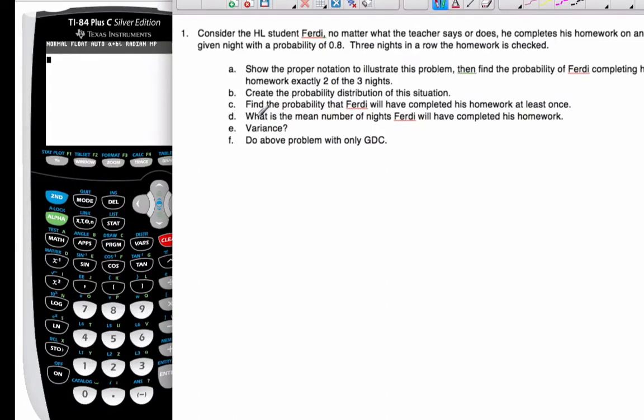Okay, so we're going to do this problem here with Ferdy, the homework guy, but we're going to do it totally by the GDC. Everything is going to be done by the GDC. I want to show proper notation to illustrate this problem. I'm going to introduce H tilde binomial. I have three nights of homework. Probability of success is 0.8.